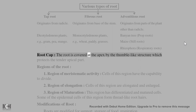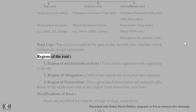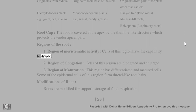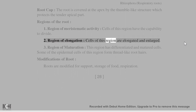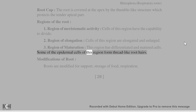Root cap: the root is covered at the apex by a thimble-like structure which protects the tender apical part. Regions of the root: (1) Region of meristematic activity — cells of this region have the capability to divide. (2) Region of elongation — cells of this region are elongated and enlarged. (3) Region of maturation — this region has differentiated and matured cells.